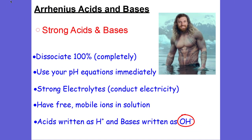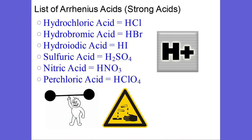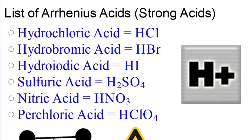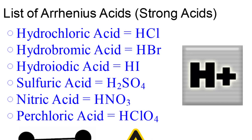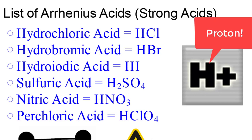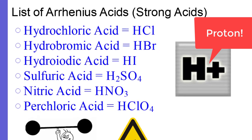Here's a list of our Arrhenius acids. You don't need to know these strong acids in terms of their chemical formulas — you just have to recognize that they are strong acids. Hydrochloric (HCl), hydrobromic (HBr), hydroiodic (HI), sulfuric acid (H2SO4), nitric acid (HNO3), and perchloric acid (HClO4). For every single one of these acids, you just write H+, which is otherwise known as a proton.